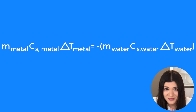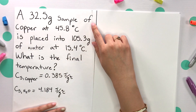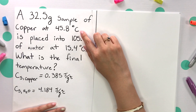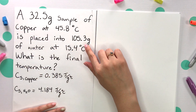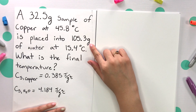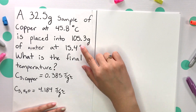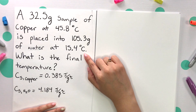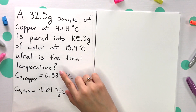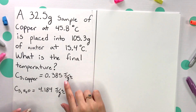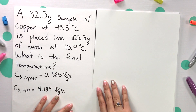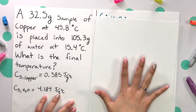Let's try one. A 32.5 gram sample of copper at 45.8 degrees Celsius is placed into 105.3 grams of water at 15.4 degrees Celsius. What is the final temperature? You're given the specific heat capacities of copper and H₂O.